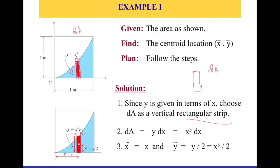Step two: after defining the vertical strip, we identify the differential element dA. To write dA in terms of x and y: it's a rectangle, so it's length multiplied by width. The length is y and the width is dx, so dA equals y dx. And since y equals x cubed, if I'm expressing everything in terms of x, then dA equals x cubed dx. That is my differential area element, and that completes step two.